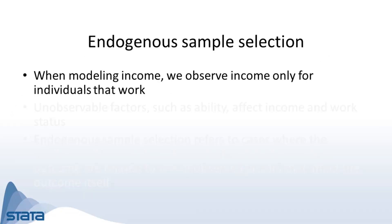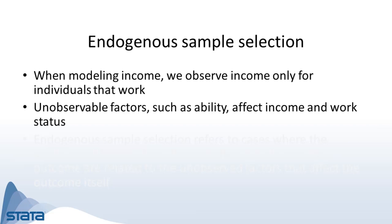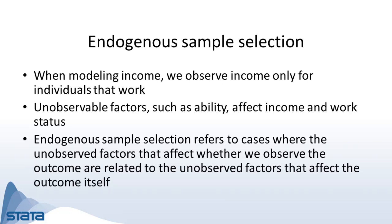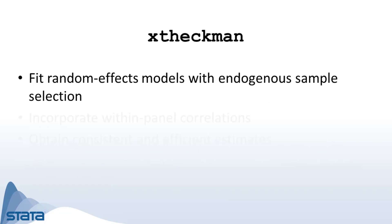To put this term in context, let's think about modeling income. We observe income only for individuals that work, but there are unobservable factors such as ability that affect income and work status. Endogenous sample selection refers to these cases where the unobserved factors that affect whether we observe the outcome are related to the unobserved factors that affect the outcome itself.